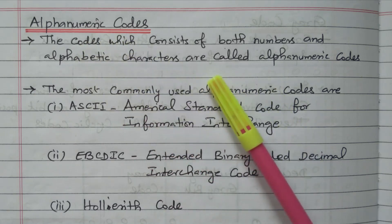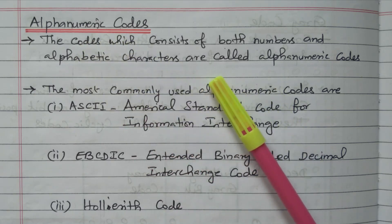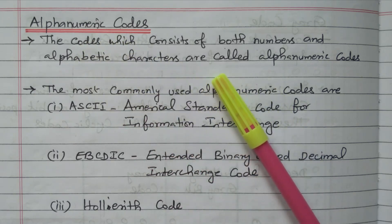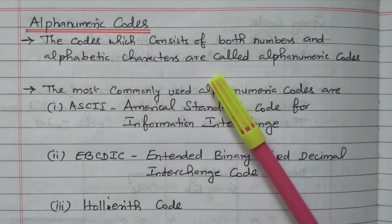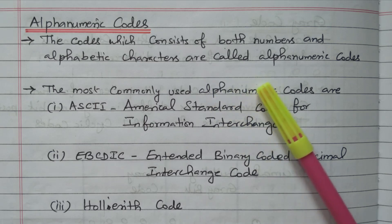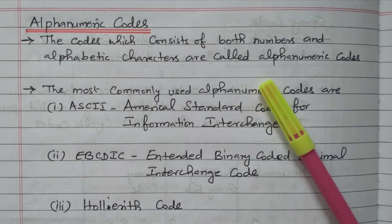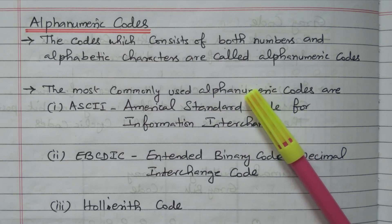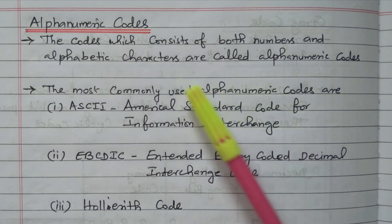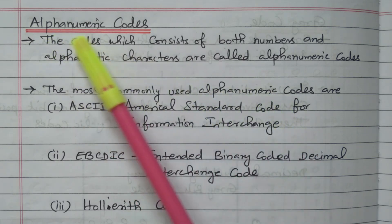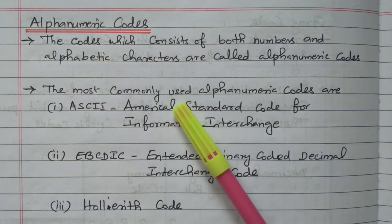This alphanumeric code comes under binary code. There are six types of binary codes available: non-weighted code, weighted code, reflective codes, sequential code, alphanumeric code, and error detecting and error correcting code. In this video we will see the alphanumeric code.